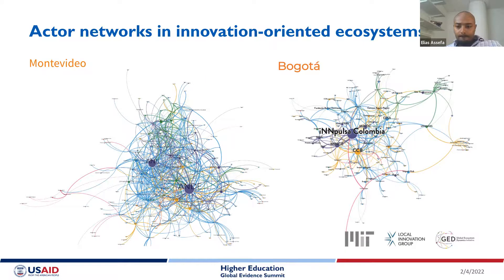The second approach, currently in progress, involves administering a social network survey to all 140 actors identified in the key informant phase, asking them to identify up to 30 contacts with whom they engage in innovation-related activity, including the exchange of information, knowledge, resources, and support. We'll then compare the actor list generated by key informant interviews alone with the actor list generated through the survey, which we anticipate will be more extensive but might include actors more tangentially involved in the ecosystem.